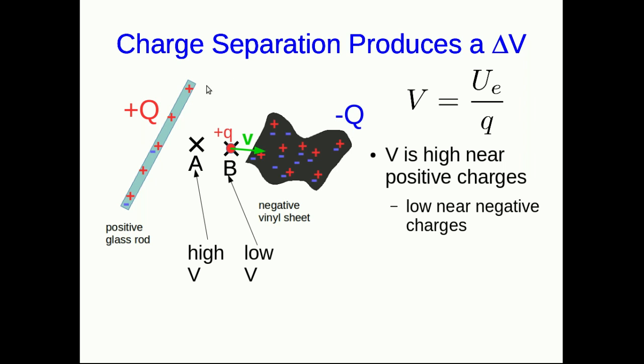But also note that that means V is changing through here. We have a change in potential between these two objects, and so all it takes to make a voltage, a potential difference, is that you separate charge.